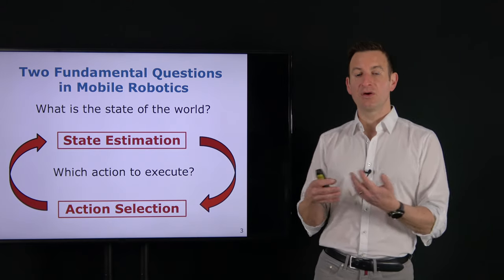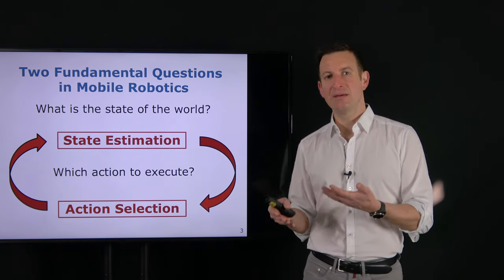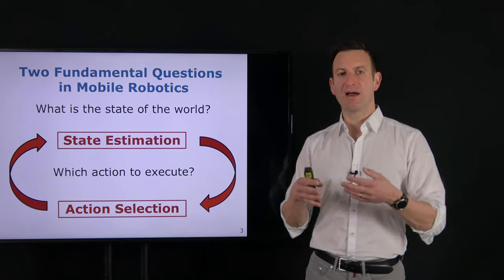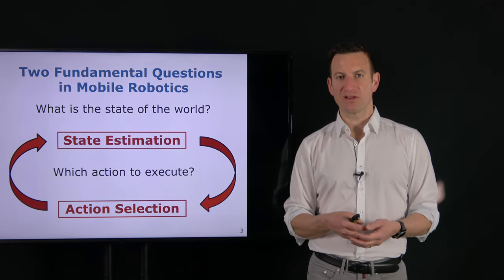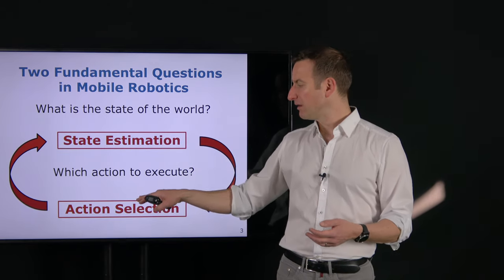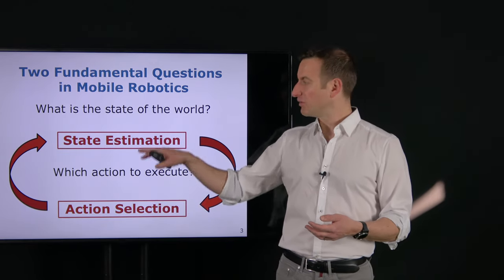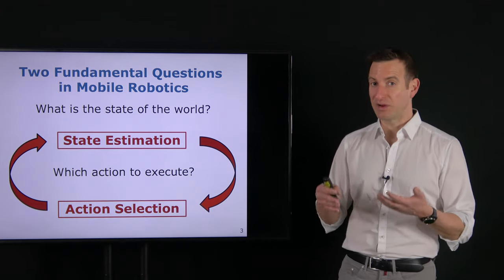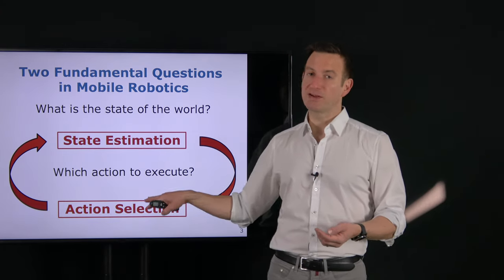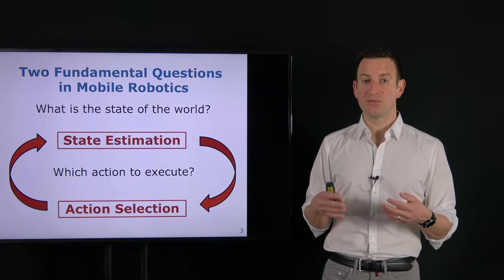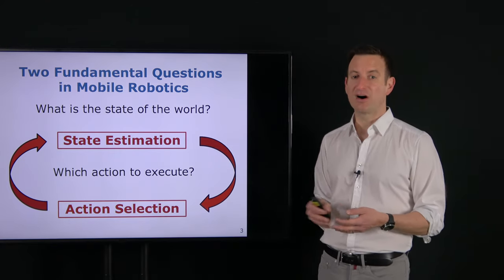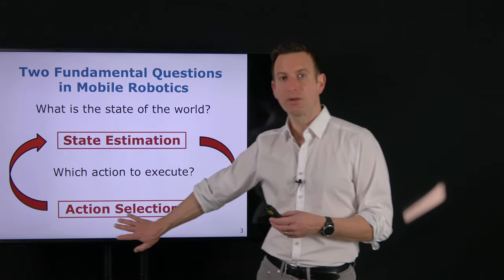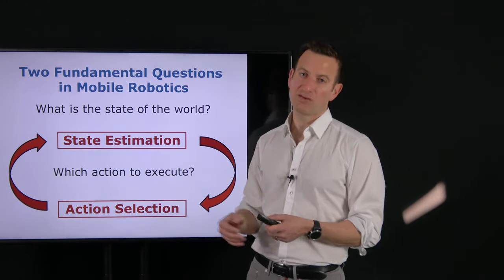I can't treat state estimation completely without action selection — or rather, I can, but then I'm ignoring some aspects. And I can't really do action selection if I don't know what the environment looks like. Perception is more independent from action than the other way around. This course will not cover action selection; we will mainly look at the state estimation problem. Active perception, for example, is not part of this course.